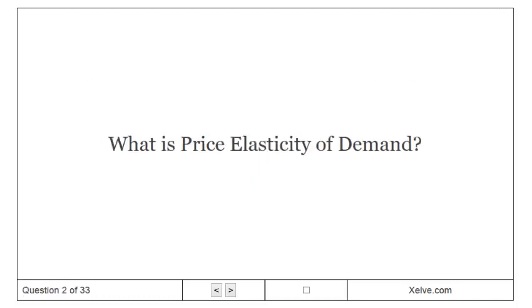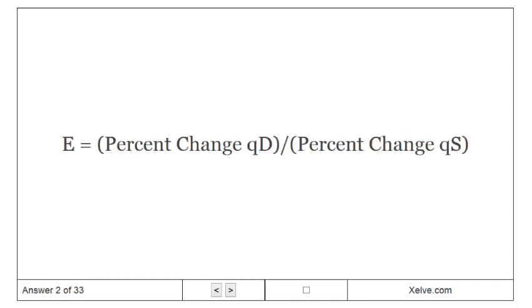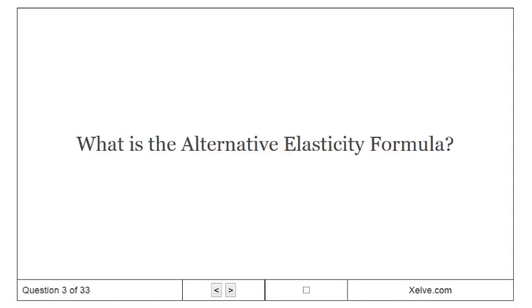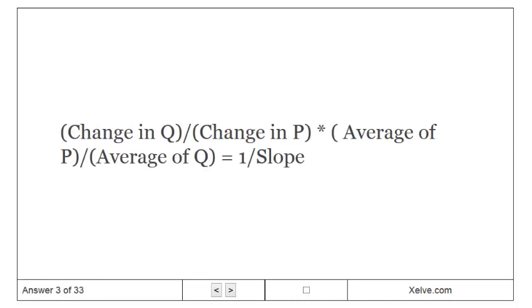What is price elasticity of demand? E equals the percentage change in quantity demanded divided by the percentage change in price. The alternative elasticity formula uses asterisk equals one over slope.